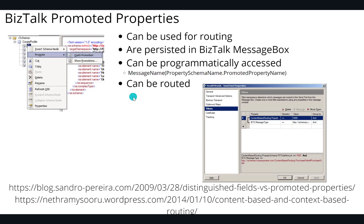We can go ahead and route messages based upon promoted properties. Here we've got a send port, and we can see that a promoted property will be part of our dropdown where we can select it and then have some sort of operation against it. Here we're looking at a promoted property where the value is greater than or equal to a thousand — so this is where it gets really granular in terms of opportunities to use that information.